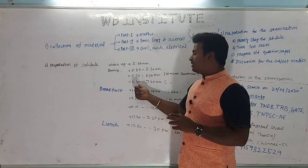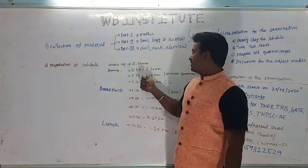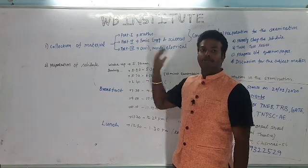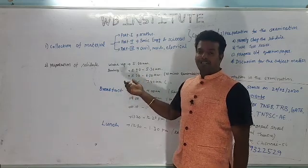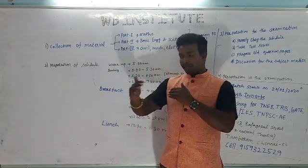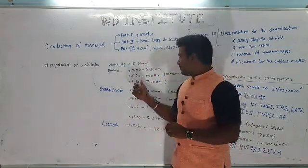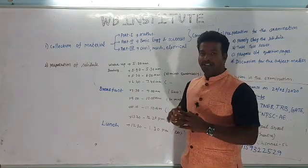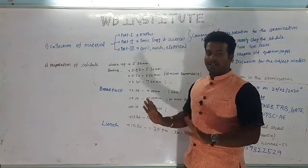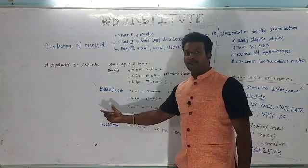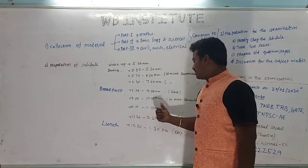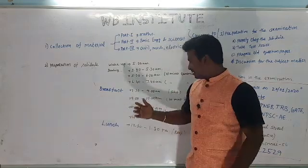If you study from 5:30 to 6:30, you need to study theory. If you study the left-side brain content like science theory, you can then activate the right-side brain by studying math. In school and college, there were alternating periods of different subjects. Apply this concept — revise your mind, then take a breakfast break. Then study a civil subject like concrete technology for 10 minutes, and recall what you studied.